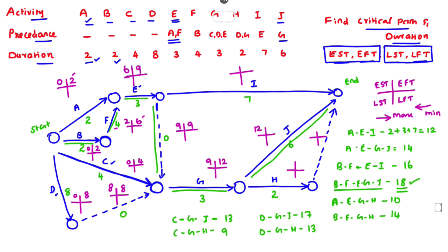Continuing forward: activity H has EST = 12, EFT = 14. Activity J has EST = 12, EFT = 18. Activity I has EST = 9, EFT = 16. The EST and EFT forward pass is complete. For LST and LFT, the last node value is 18. Working backward: LFT of J = 18, LST of J = 18 − 6 = 12. LFT of I = 18, LST of I = 18 − 7 = 11. LFT of H = 18, LST of H = 18 − 2 = 16.